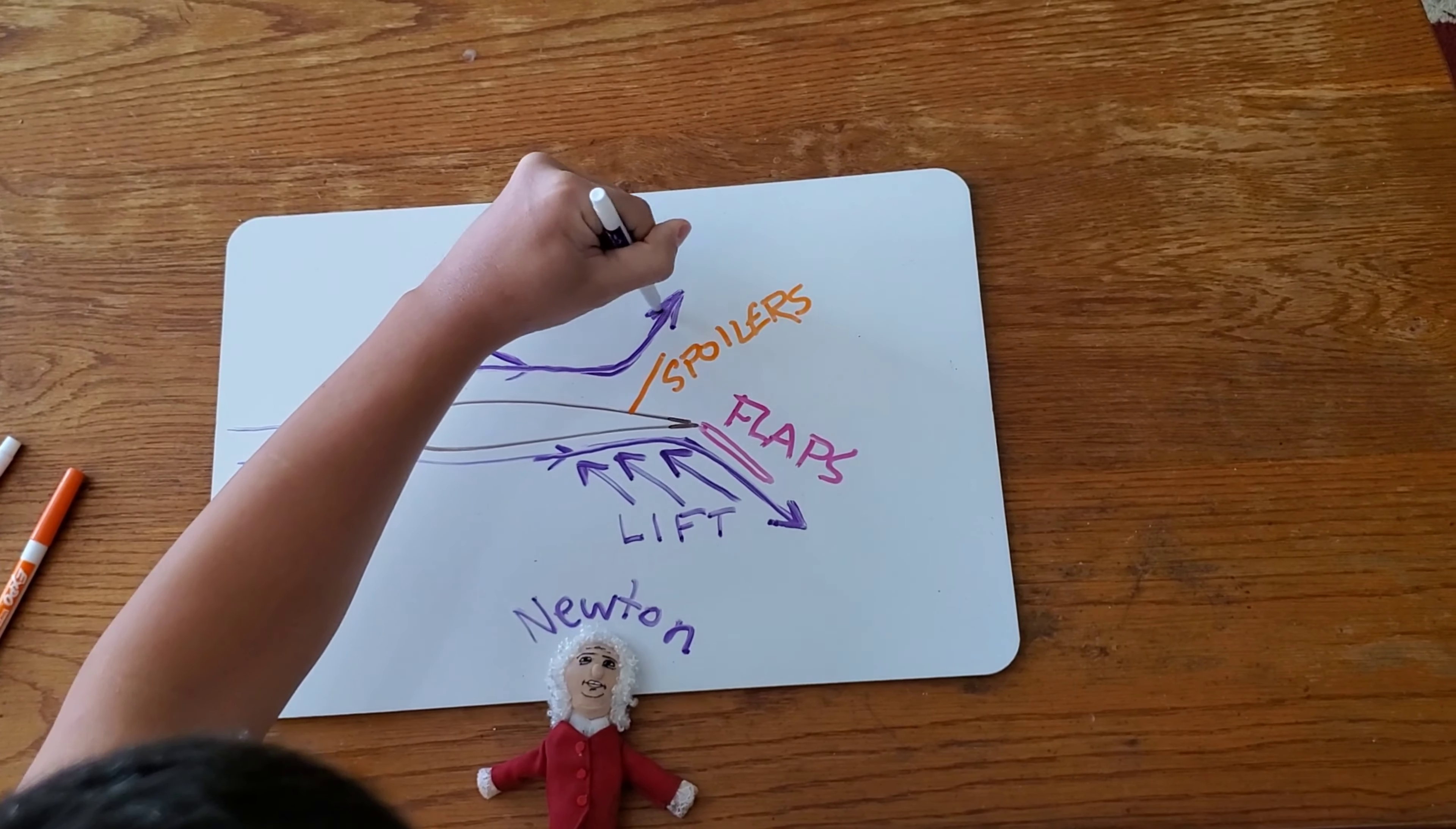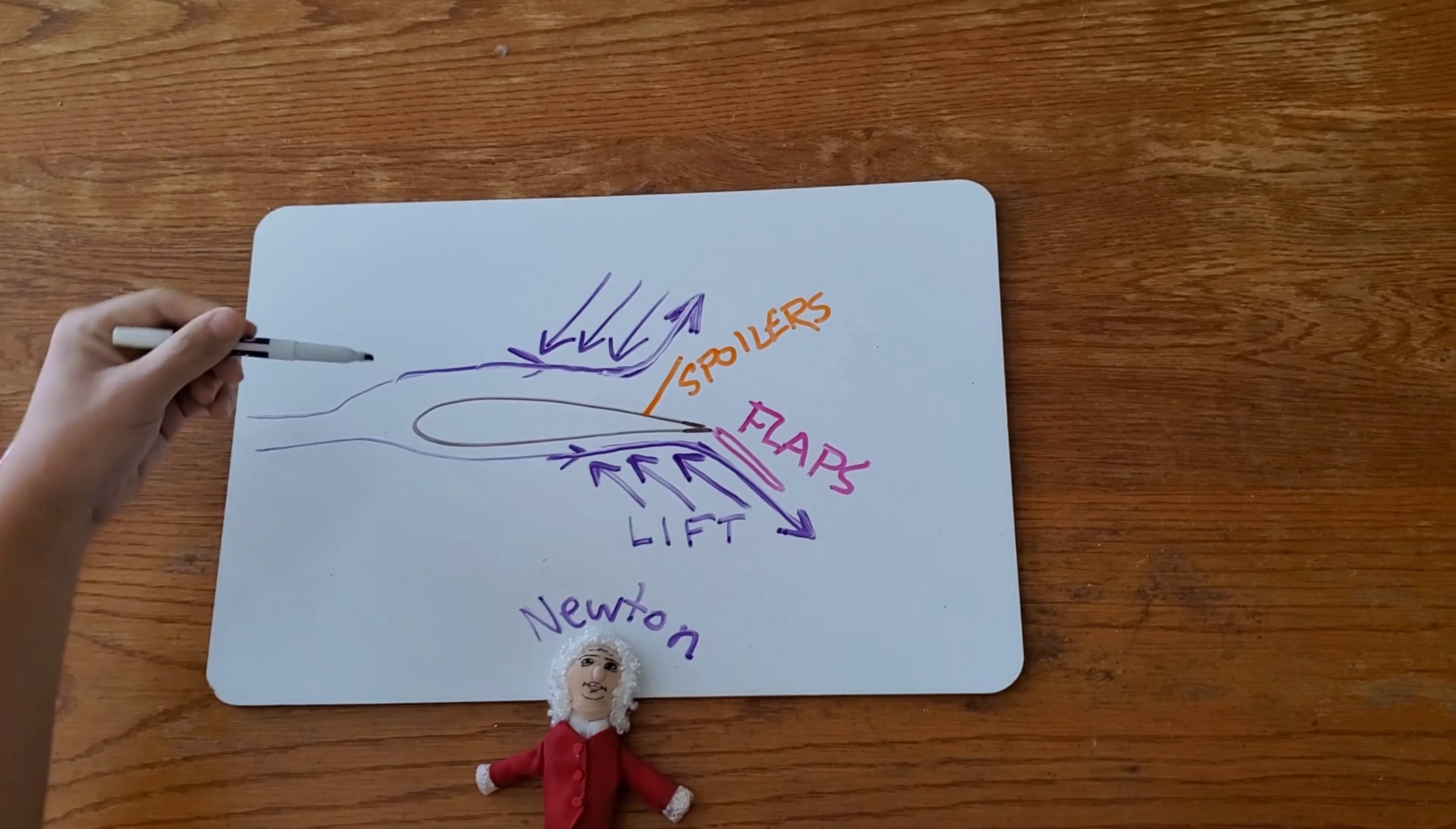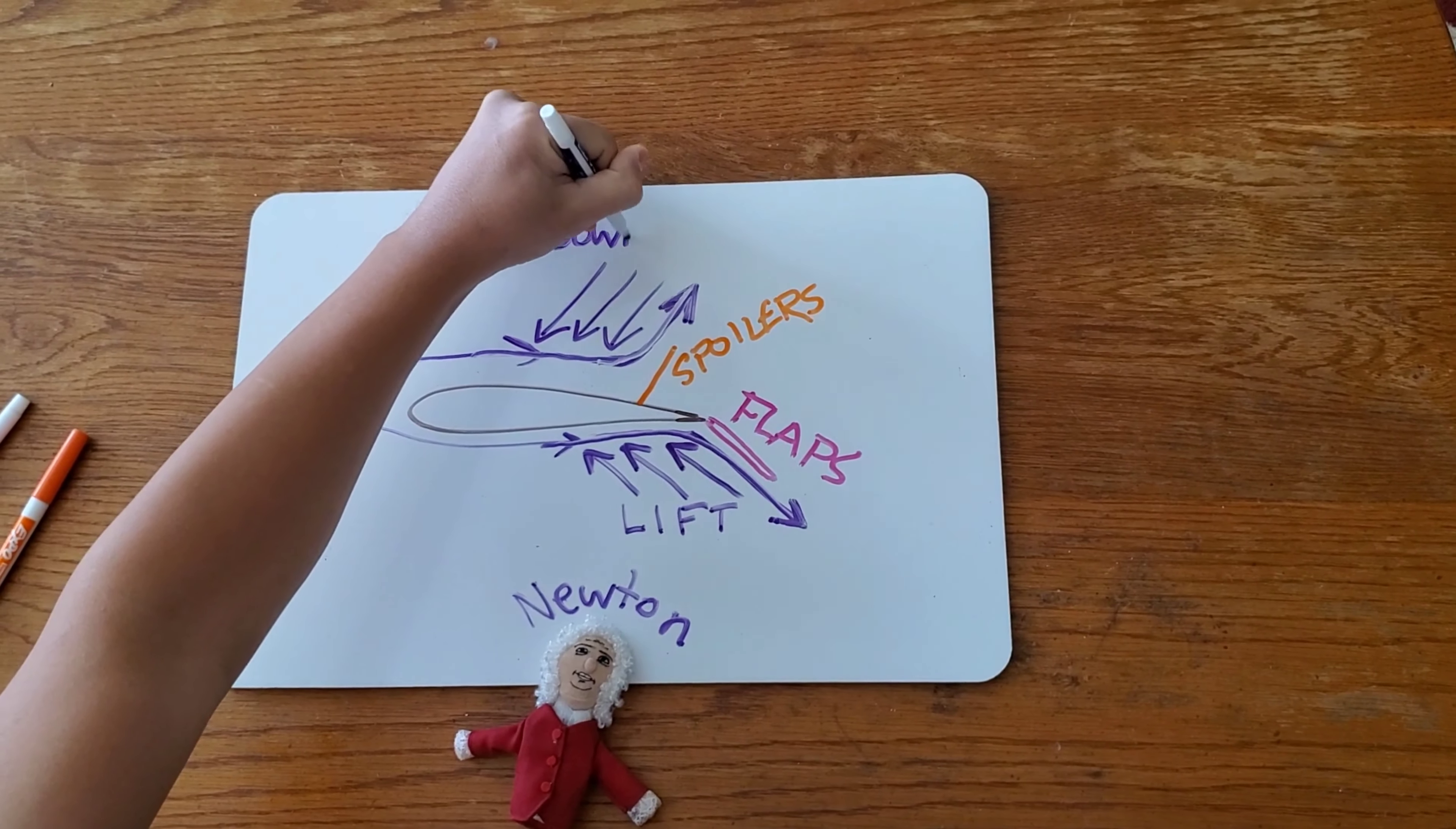Spoilers direct the air upward and away from the airplane's wing. Remember what Newton said? For every action, there's an equal and opposite reaction, right? The reaction to the air being directed upward by the spoilers is that the wing is pressed down. This is called downforce.